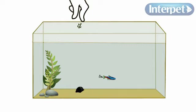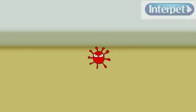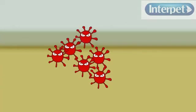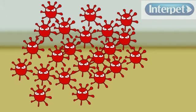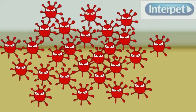As these waste materials decay, they produce invisible poisons in the water, primarily ammonia, which builds up and is extremely harmful to your fish, causing disease and death.